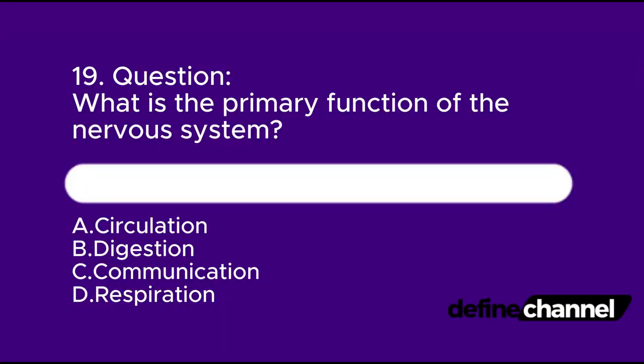Question 19. What is the primary function of the nervous system? A. Circulation. B. Digestion. C. Communication. D. Respiration. Which is the correct answer?